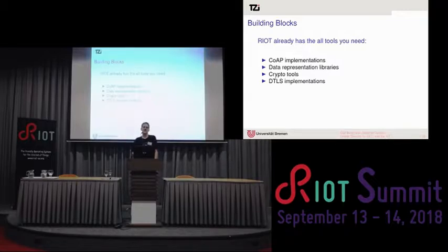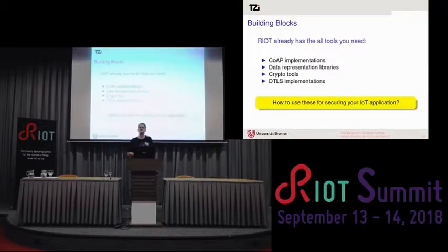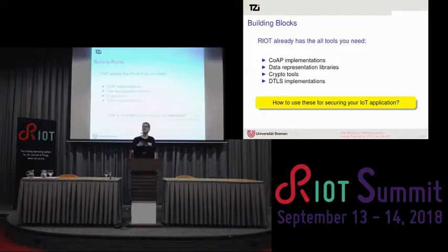There are at least two DTLS implementations I know of. One is TinyDTLS, which is now in its current version in RIOT, and the wolfSSL people are working on their port as well. The question now is how to use these — we have each tool and the API for that tool, but the question is what do I have to do as an application developer to send data securely over, for example, CoAP?